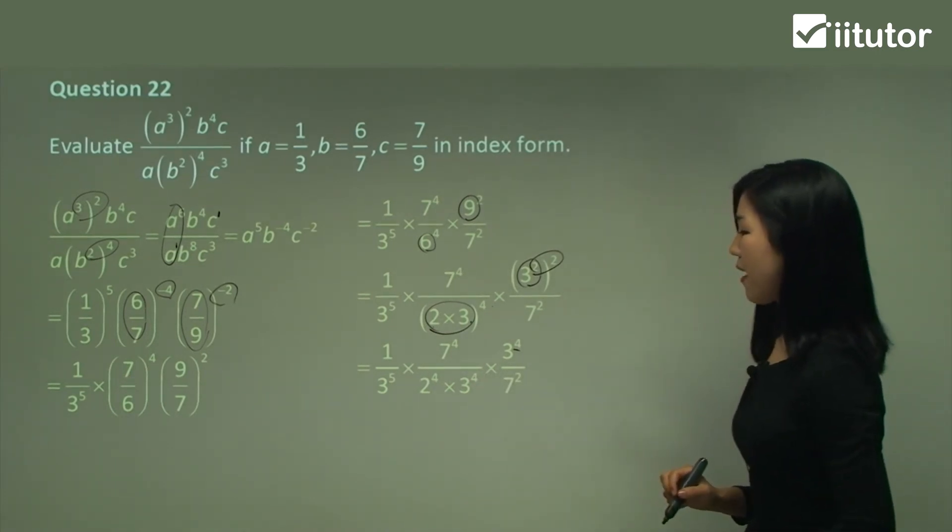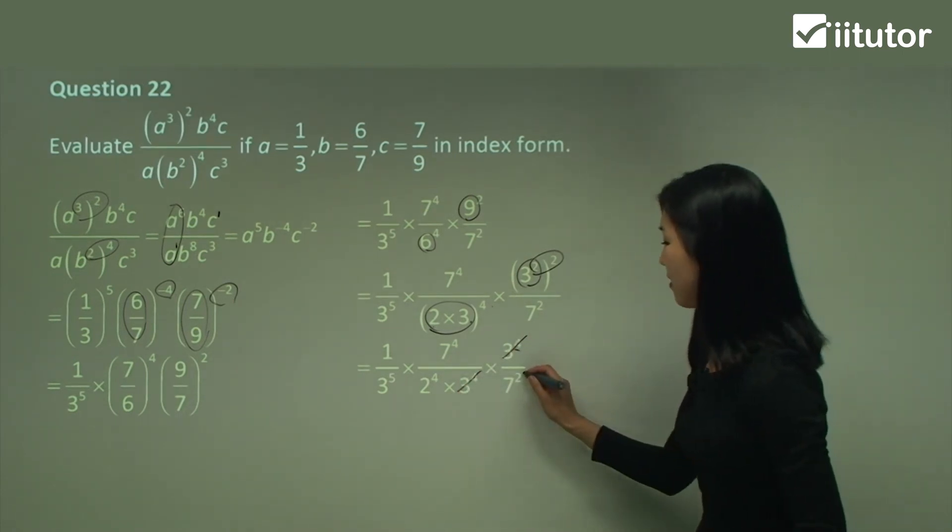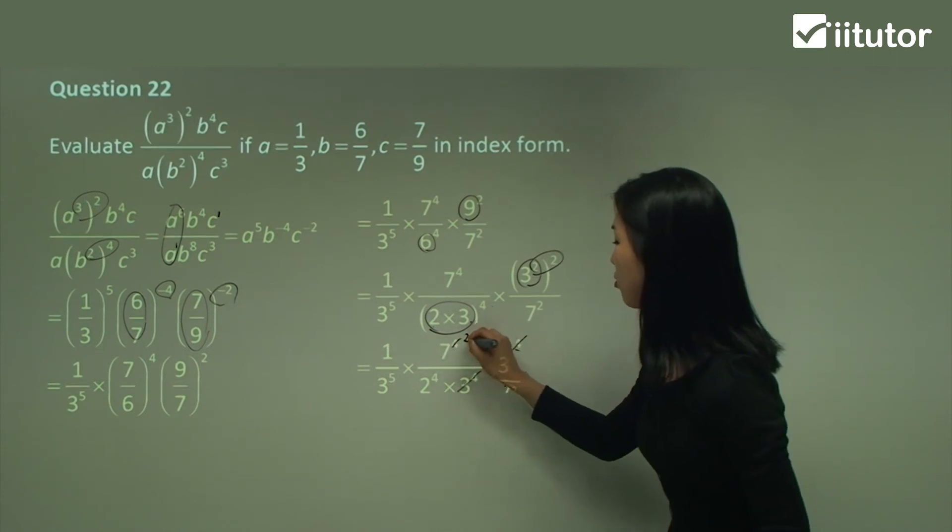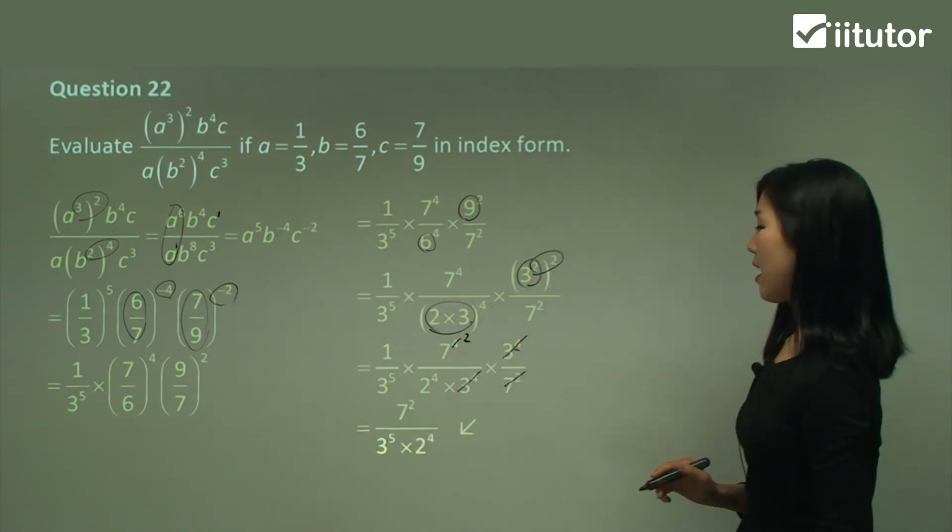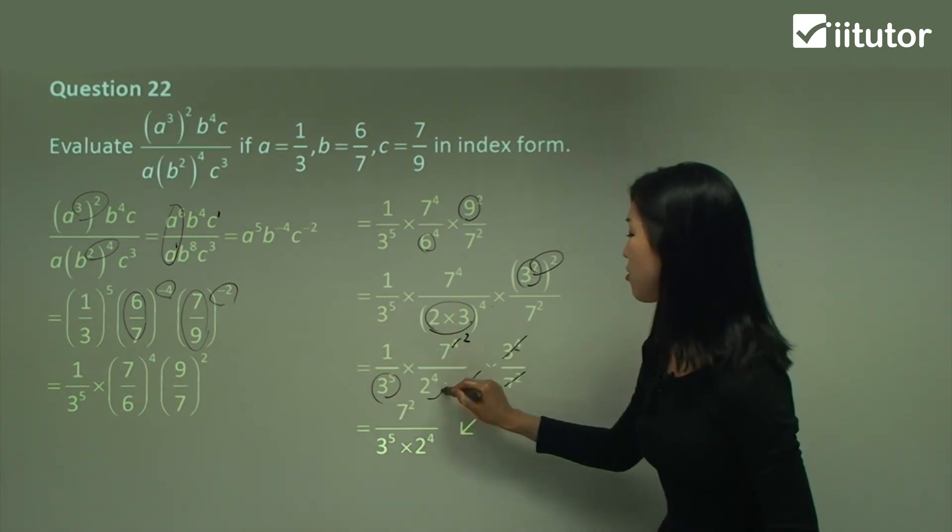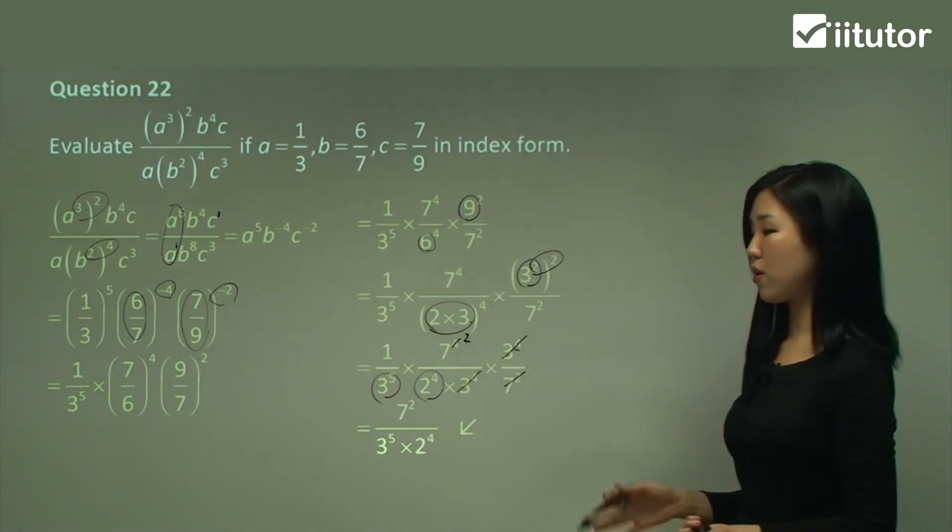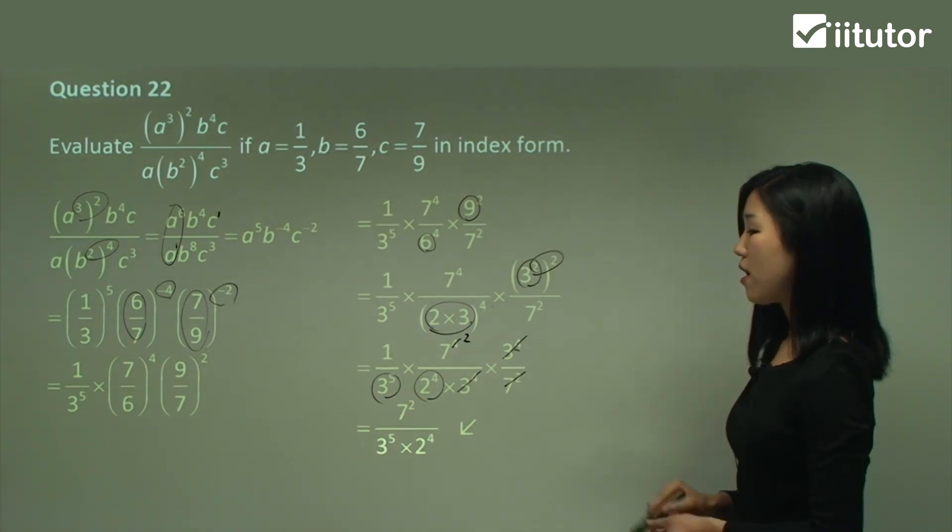Now we can simplify. So these and this will cancel. We can see that's a 7 squared. 7 squared and that will become a 2. So we just have 7 squared on the top, 3 to the power of 5 and 2 to the power of 4 on the denominator. And we can't simplify any further because we have no more common factors. So that's the answer.